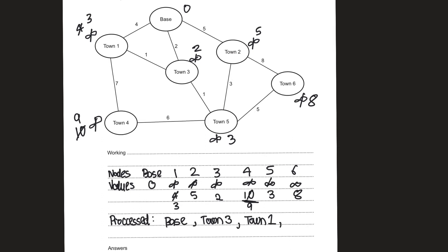Town three is already processed so we skip it. For town two, going via town five would be three plus three equals six, but this is higher than the current value of five, so we don't update that. It seems like we have processed town five as well.